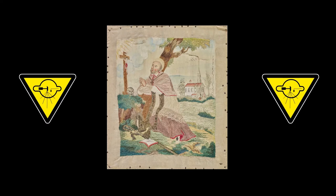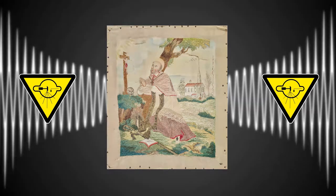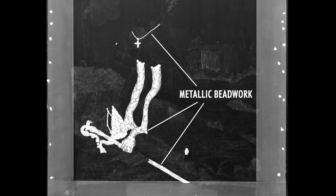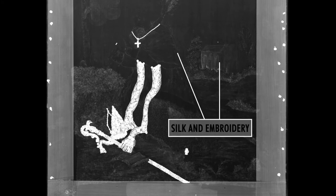Radiography is a non-destructive examination. It is useful to see through the different levels of density of an object and, in some cases, to uncover previous restorations and compositions. When X-ray radiation is emitted, it passes through matter and is recorded on an imaging plate. White indicates denser material, like the metallic beadwork, and black indicates thinner and lighter material.